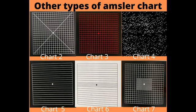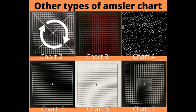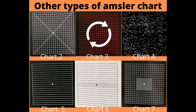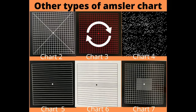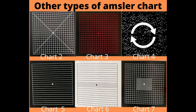There are seven chart types in total. Chart 2 is similar to chart 1 but has diagonal lines that aid fixation in patients unable to see the central spot as a result of a central scotoma. Chart 3 is identical to chart 1 or 2 but has red squares; it is used to detect color scotomas and desaturations that may occur in toxic maculopathies, optic neuropathies, and chiasmal lesions. Chart 4 consists of only random dots and is used mainly to distinguish scotoma from metamorphopsia.